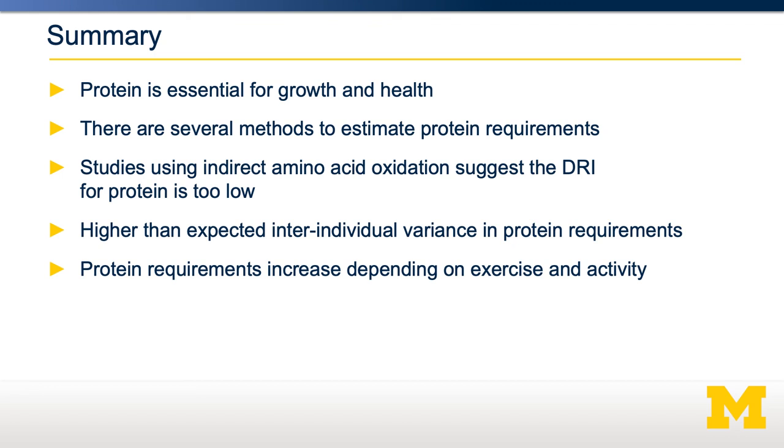Another part of dietary protein intake is that protein requirements are quite sensitive to activity levels — as somebody has higher exercise activity levels, their protein requirements increase. Unlike carbohydrates and fat, we can experimentally determine an individual's protein requirements at different time points, across different stages, and across different activity levels. Because of this, there's quite a lot of rigor in determining what an individual's protein requirements are, and that can be used to determine the precise amount of protein optimal for a person based on their lifestyle, activity levels, age, sex, and pregnancy status.